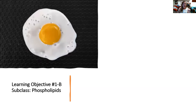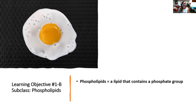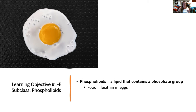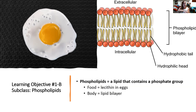Moving further on the flow chart, phospholipids are a lipid that contains a phosphate group — literally a lipid with a phosphate group, that's it. Egg yolks contain a phospholipid called lecithin, and that lecithin makes egg yolks so versatile when making Béarnaise sauce, Hollandaise sauce, or mayonnaise, because it has one side that is water-loving and one side that is water-hating. This allows for emulsification — mixing oil and water together. If you put enough egg yolks into a mixture of water and oil, you can mix it all together.